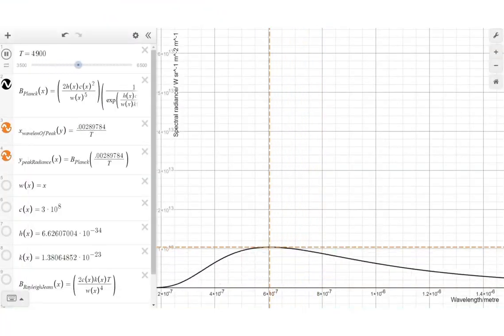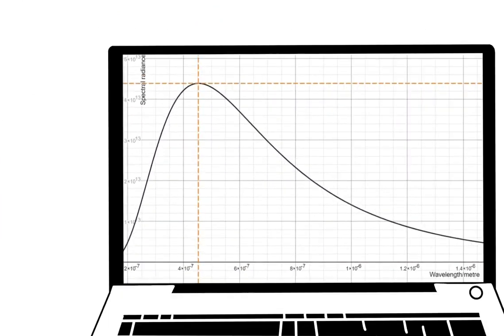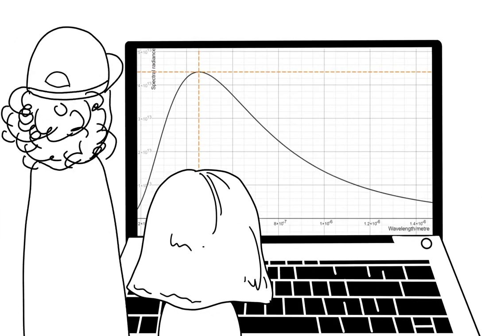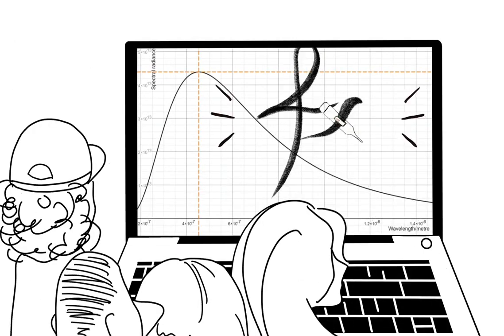Incredible! The peak shifts to the left as temperature increases! Yes! Further to identifying the trend, scientists wanted to come up with a mathematical equation that could perfectly predict the distribution graphs under various temperatures.